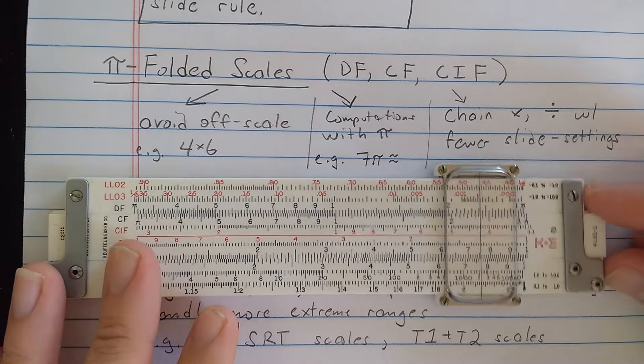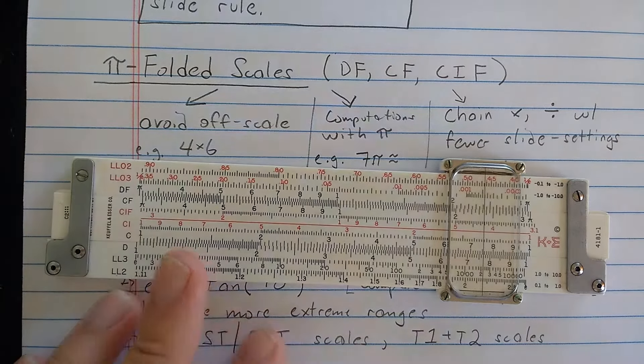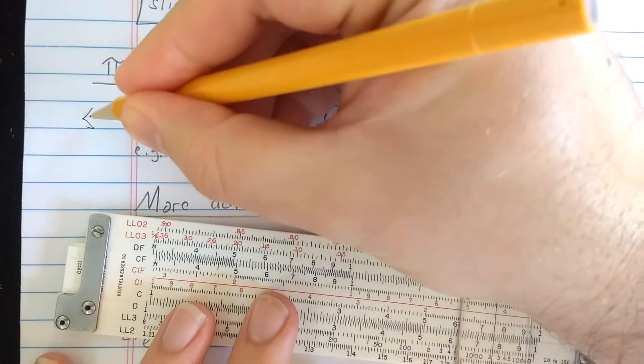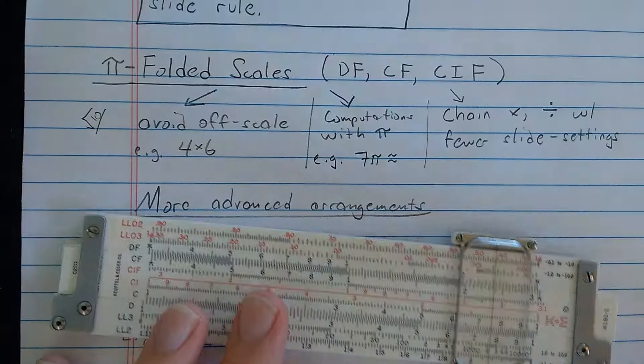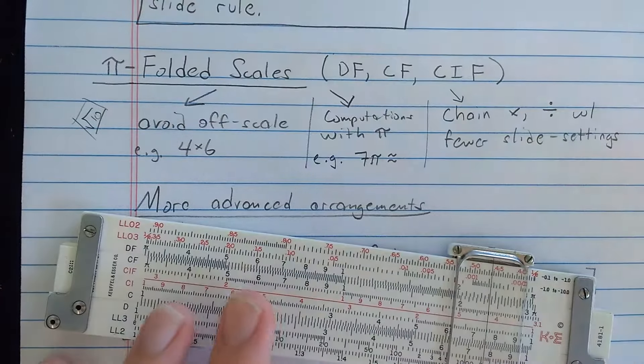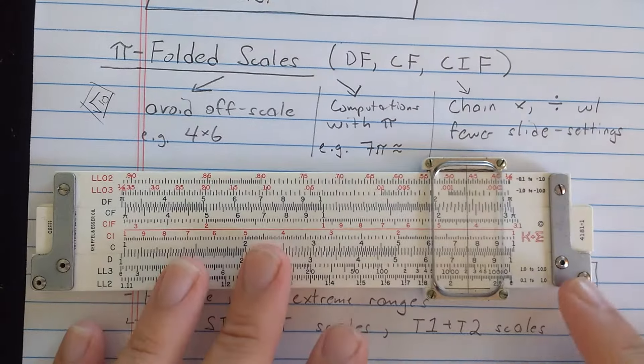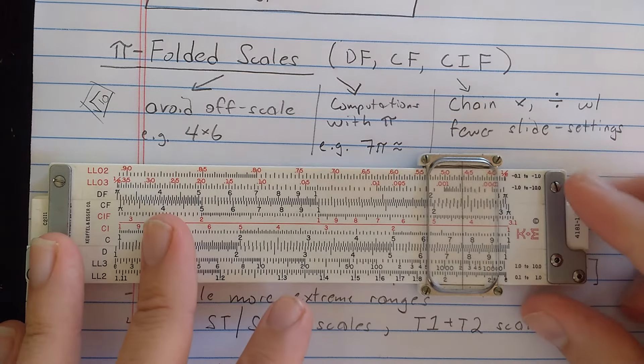Actually for that purpose it would be optimal to fold the scales at square root 10. So you will occasionally see slide rules which are folded at square root 10 instead. That's exactly in the middle of a C or a D scale. But most are folded at pi and we'll see why in a second.